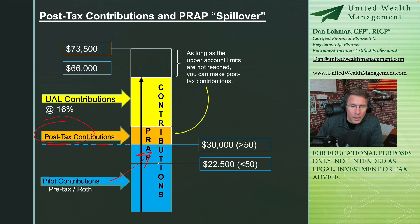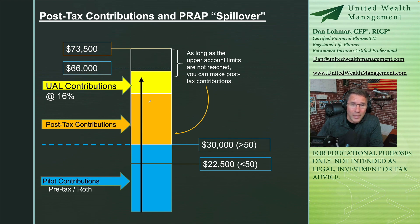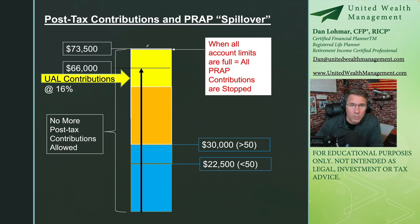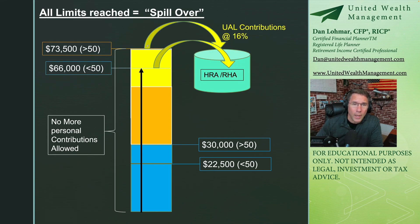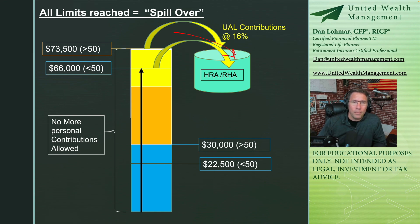It really depends on your pay scale and how much you're flying. The whole idea, if you're trying to maximize spillover, is to fill these contribution buckets up as early in the year as possible. If you fill the pre-tax/Roth limits in the first couple of months and then make post-tax contributions, you're ultimately minimizing the amount United can put into the PRAP. Once the plan is full, all contributions to the PRAP cut off and United's 16% contribution spills into the active HRA or the RHA. That's the essence of spillover.